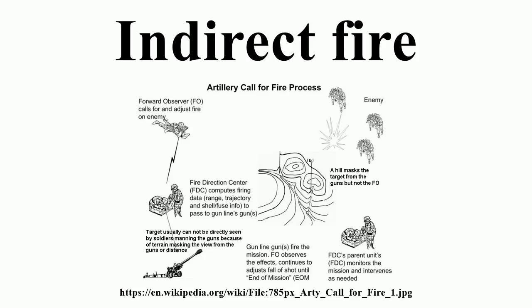There are two dimensions in aiming a weapon: in the horizontal plane, and in the vertical plane, which is governed by the distance to the target and the energy of the propelling charge. The projectile trajectory is affected by atmospheric conditions, the velocity of the projectile, the difference in altitude between the firer and the target, and other factors. Direct fire sights may include mechanisms to compensate for some of these.